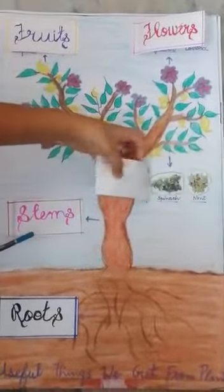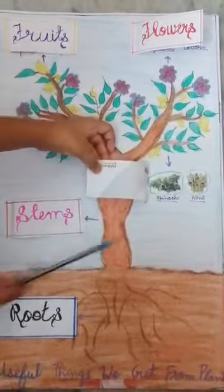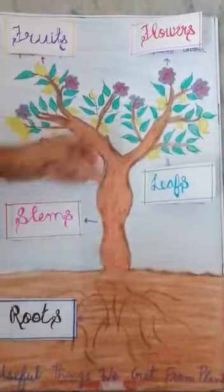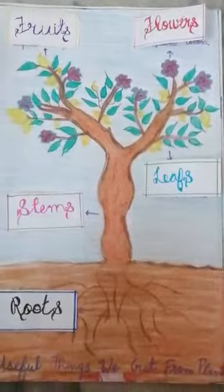From the leaf, we get spinach, mint, coriander, etc.